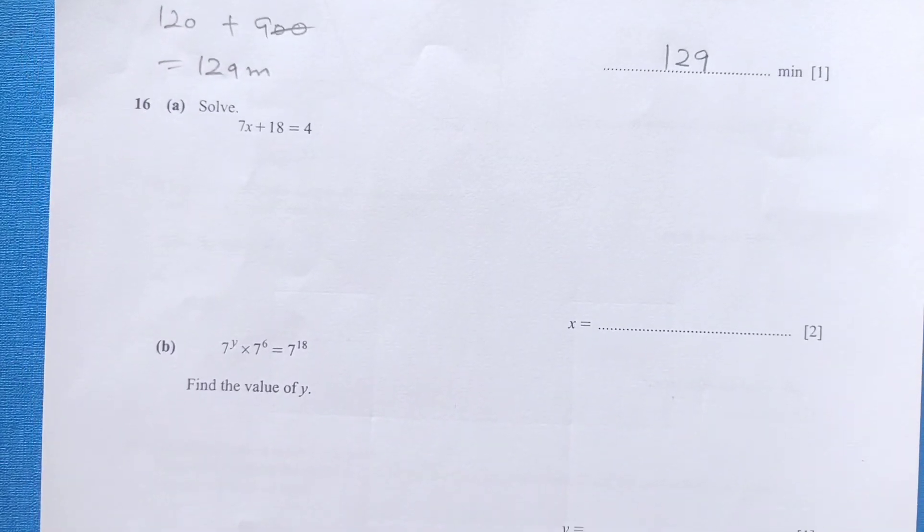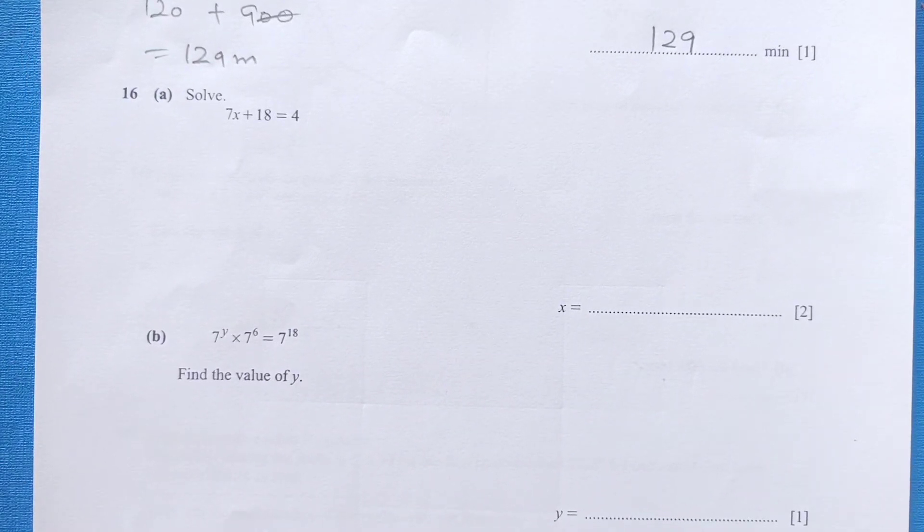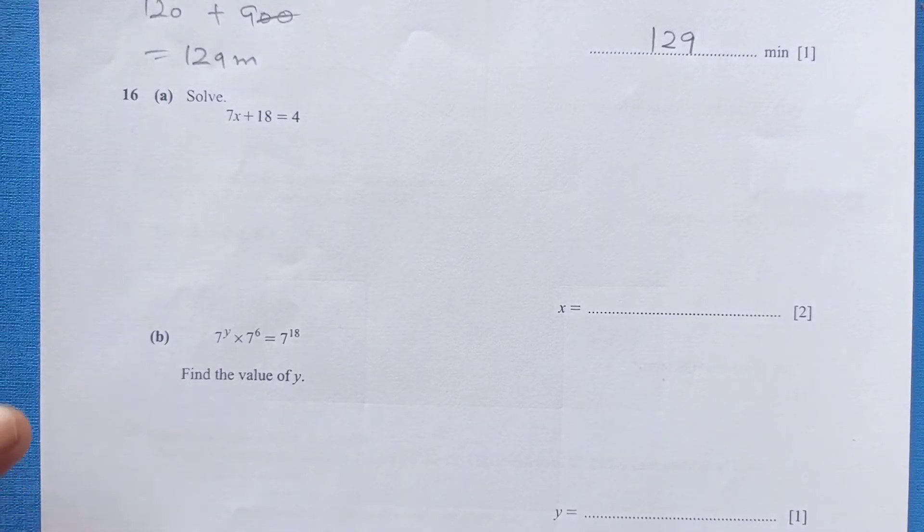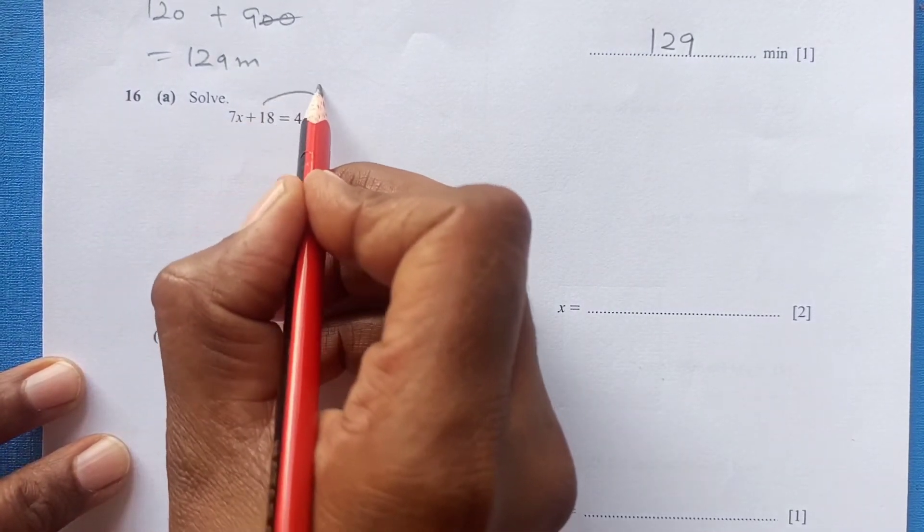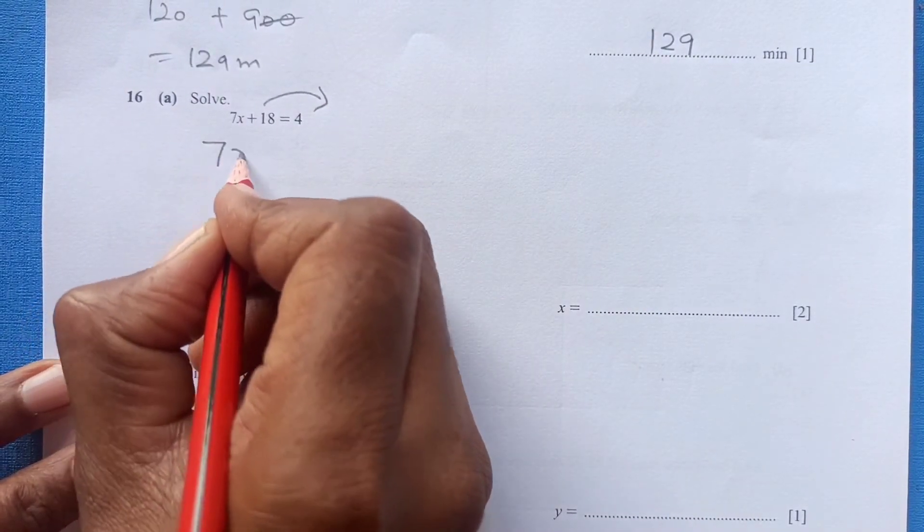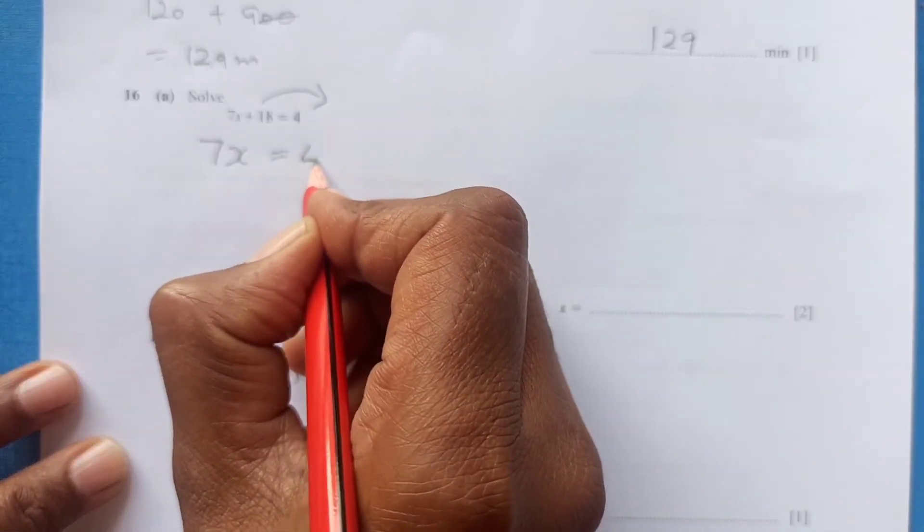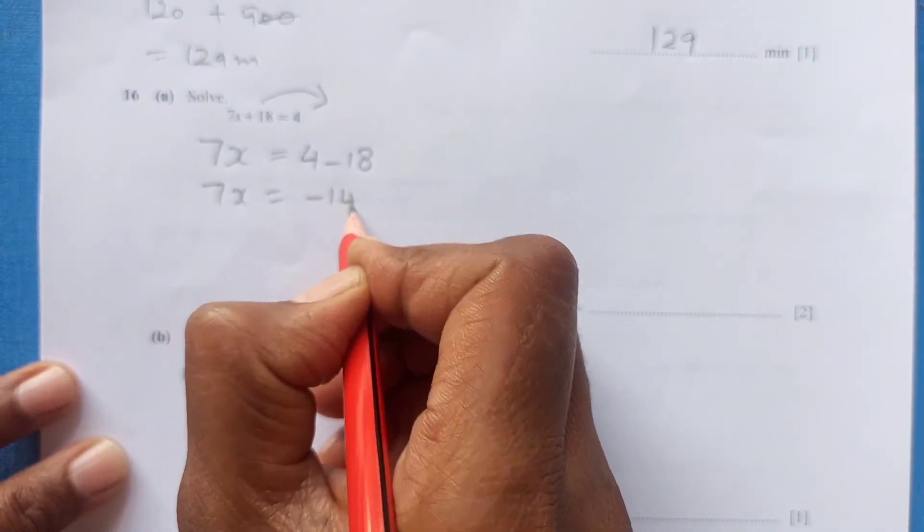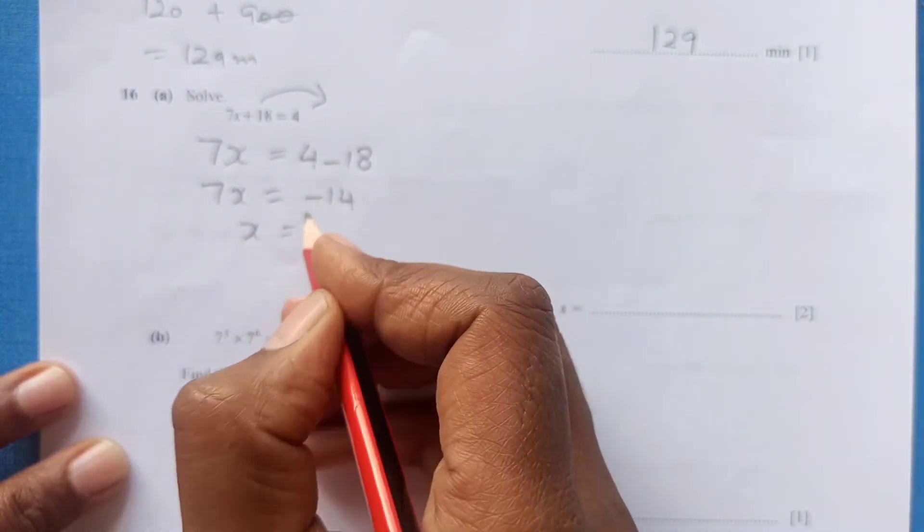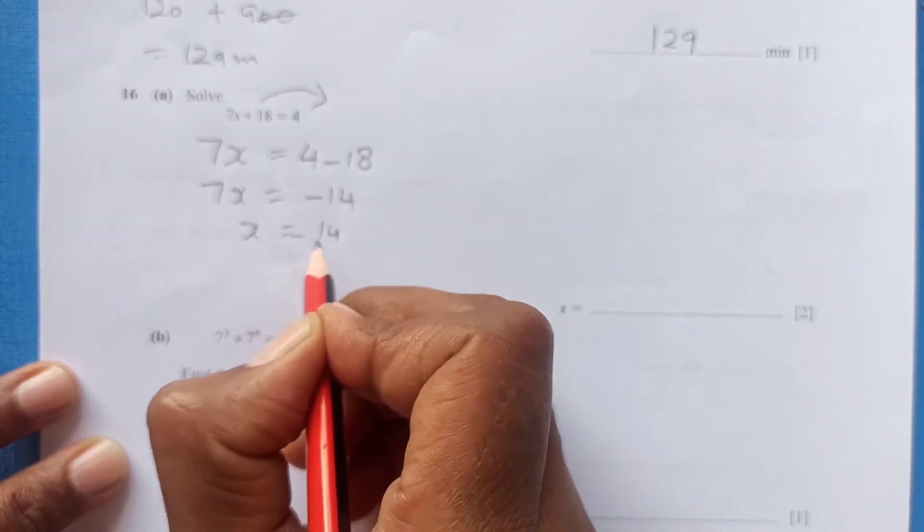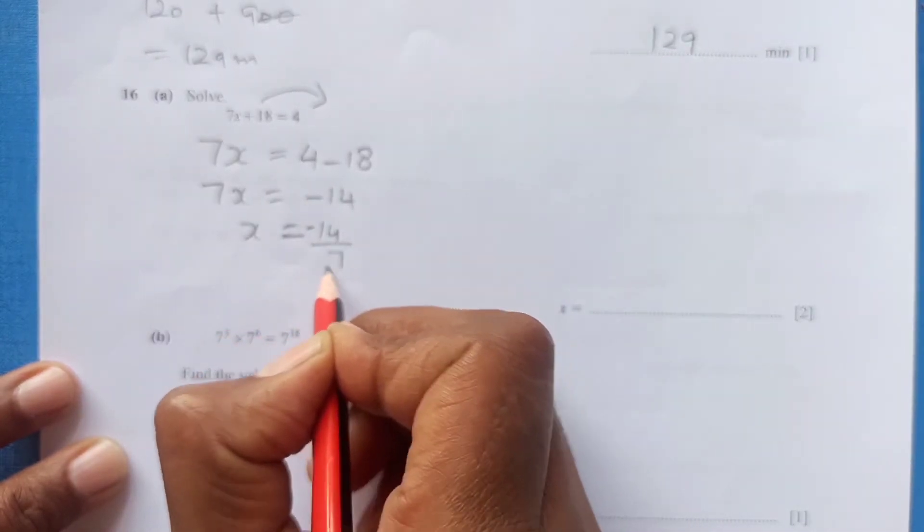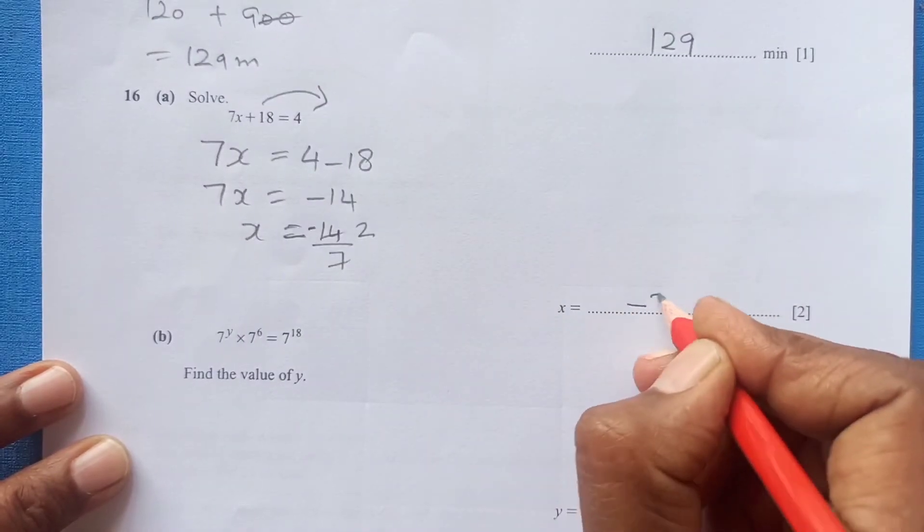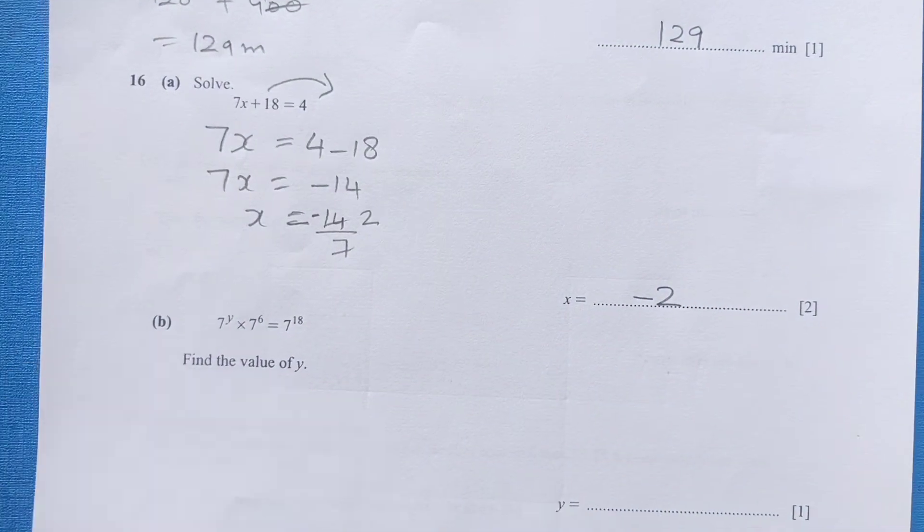Now solve this equation. We have 7x plus 18 equals 4. Find the value of x. We need to move 18 to other side. So 7x equals to 4 minus 18, which is negative 14. So x will be negative 14 over 7 which is 2. So x will be negative 2.